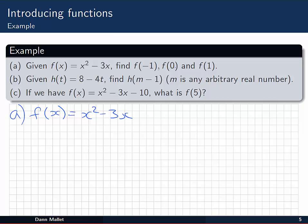Now, like I was saying, this is just a matter of substituting those values of the independent variable into the equation for the function itself. So f of minus 1, that's going to be minus 1 squared take away 3 times minus 1.